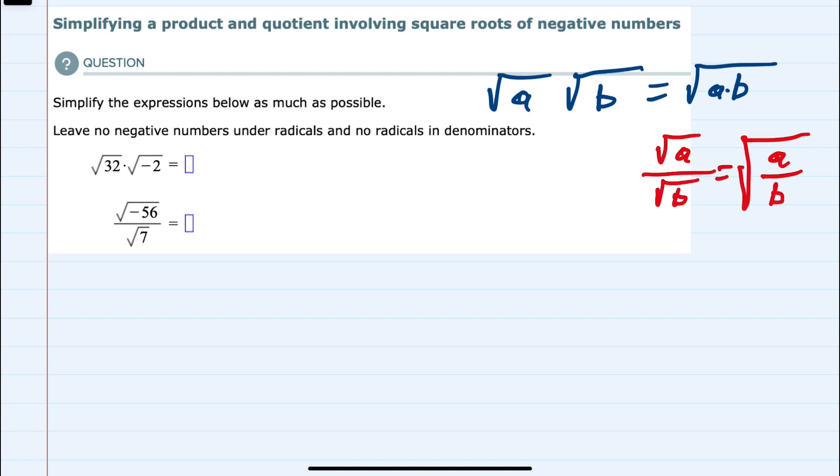So starting with this first expression, we have multiplication. I can rewrite this as one radical and then underneath we would have 32 times negative 2 or negative 64.